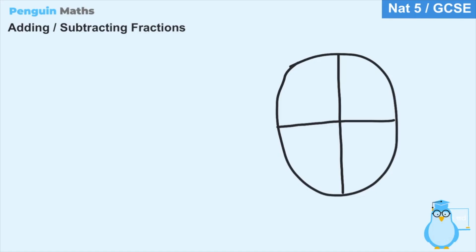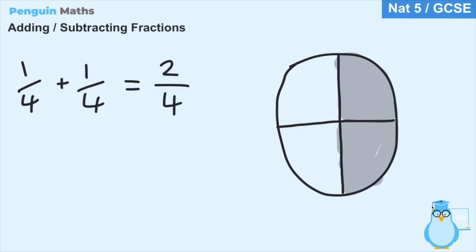Okay so we're going to use the pizza analogy from previous lessons. Out of these four slices, let's assume we have one slice which represents one over four, or one quarter of the pizza, and let's say we have one more slice after that. So what we've had is one quarter plus another quarter, and that's going to equal a total of two quarters. What I did there is add both of the top numbers together — one plus one — and the bottom numbers stay the same.